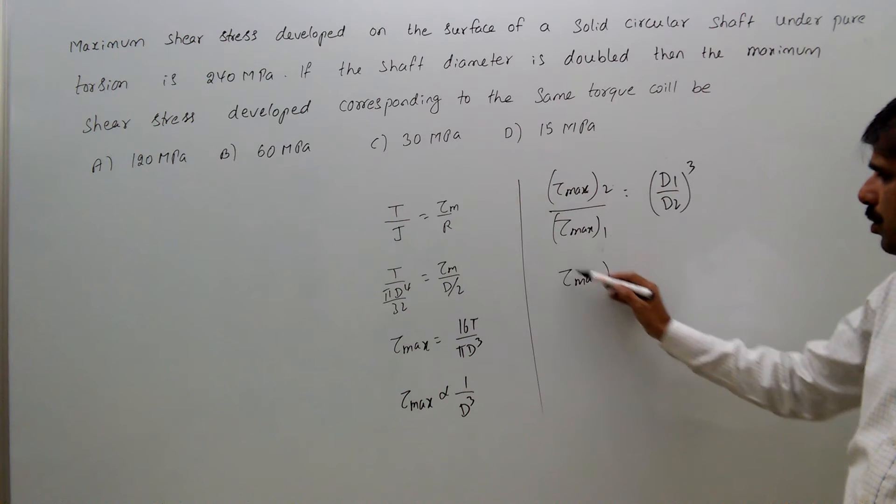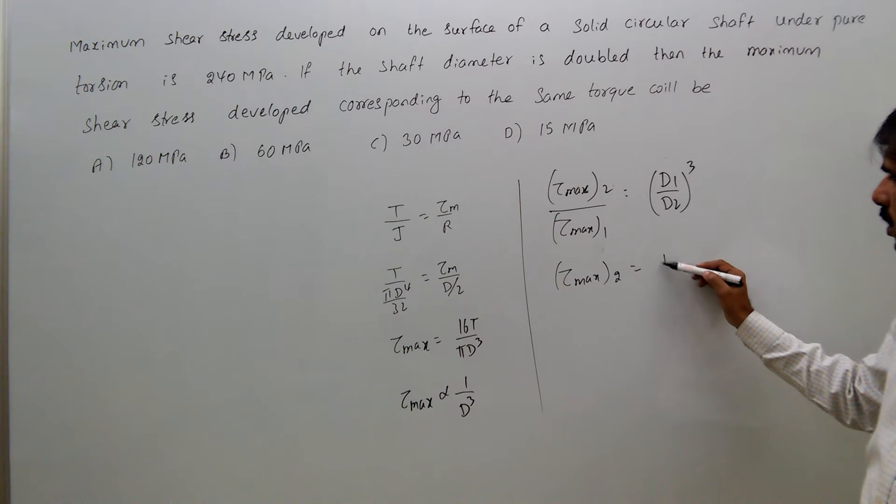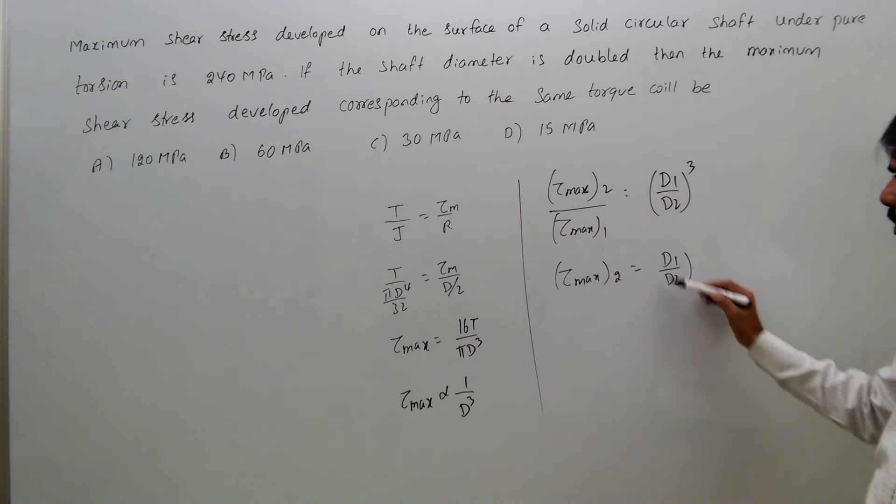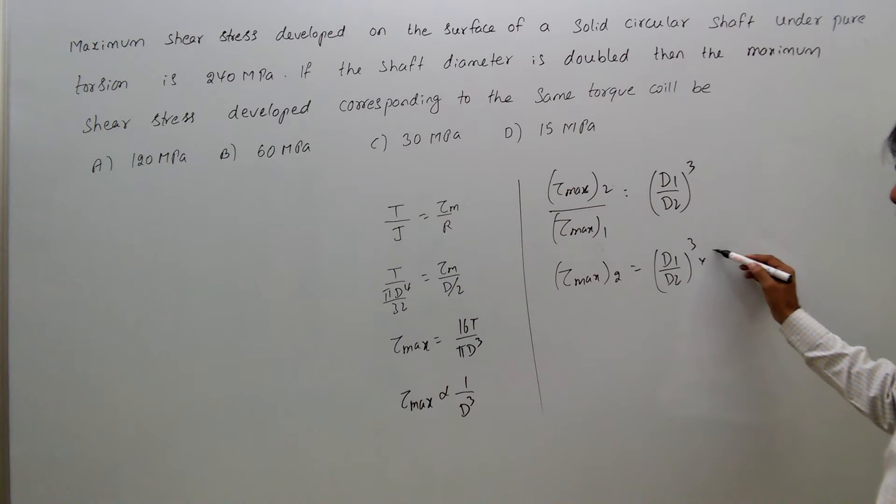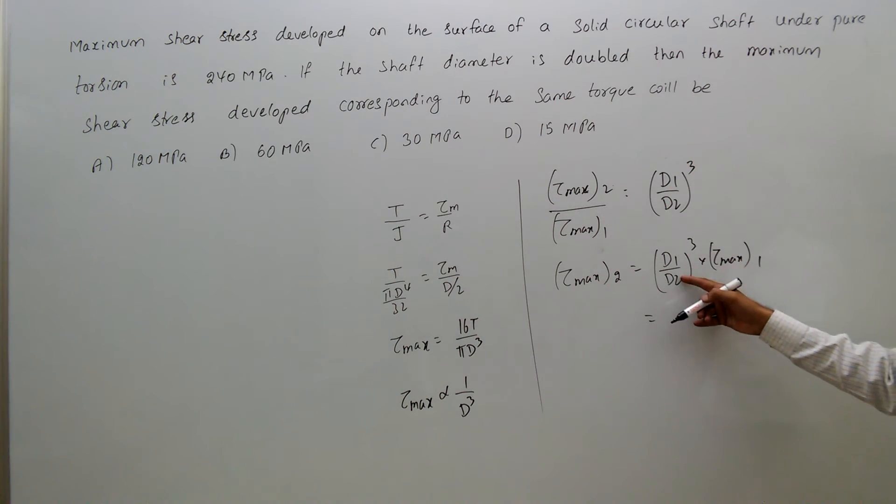So, tau max 2 equal to d1 by d2 whole cube times tau max 1. Since d2 is double of d1, we have d1 by d2 is 1 by 2, so that's 1 by 2 whole cube into 240.